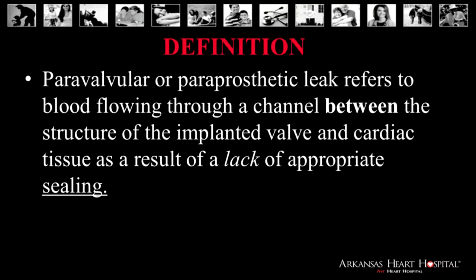We are going to be talking about paravalvular leaks. A paravalvular or paraprosthetic leak refers to a leak of blood through a channel between the structure and an implanted valve or cardiac tissue that has had a lack of appropriate sealing. Most structures of the heart are not perfectly circular, and even though our devices are created to be perfectly round, most things in the human body are not that shaped. We rely a great deal on our surgical expertise to appropriately seal these valves. Sometimes the healing is not appropriate, the sutures get lost, or there's a great degree of calcium that builds up, and that allows for a leak to develop.